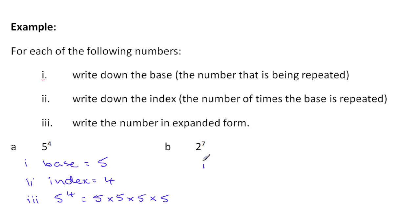In this case here, the base number is two. The index number is seven. And so in expanded form, the number two is going to be multiplied together by itself seven times.